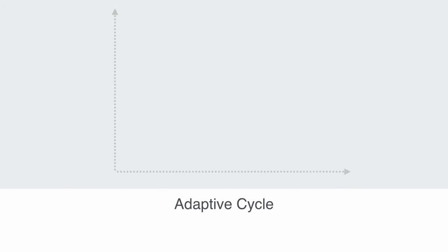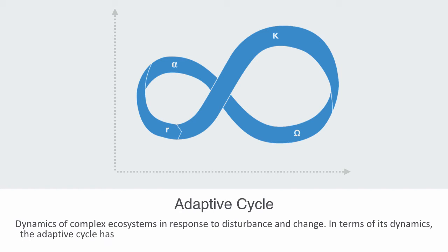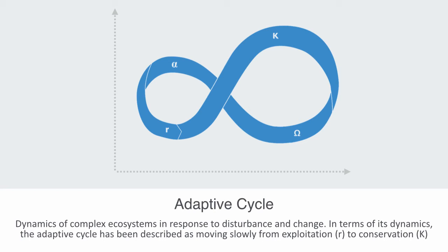The adaptive cycle, originally conceptualized by Holling, interprets the dynamics of complex ecosystems in response to disturbance and change. In terms of its dynamics, the adaptive cycle has been described as moving slowly through a cycle from an exploit stage to a conservation stage, to a collapse and release stage, to a rapid reorganization. It can then begin a new adaptive cycle or alternatively transform into a new configuration. The adaptive cycle is one of the main heuristics used to understand socio-ecological system behavior and the process of adaptation.